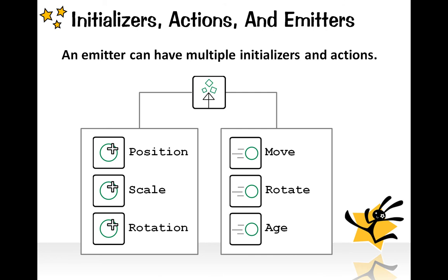This sample diagram shows that this emitter object has three initializers for position, scale, and rotation, and three action objects for moving, rotating, and aging.